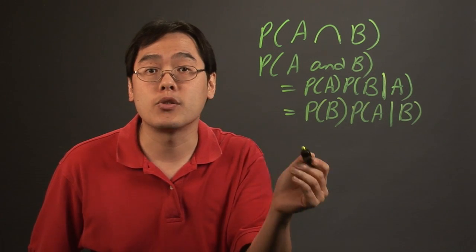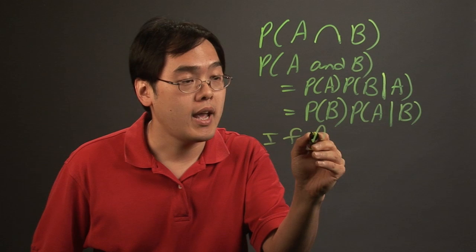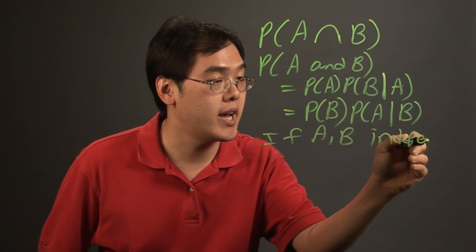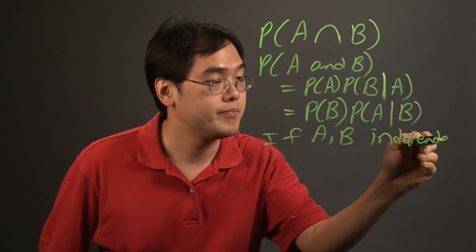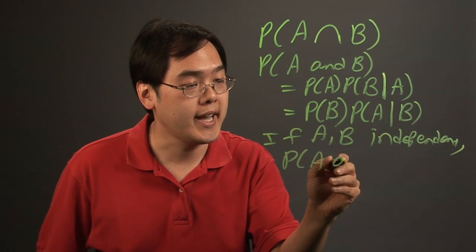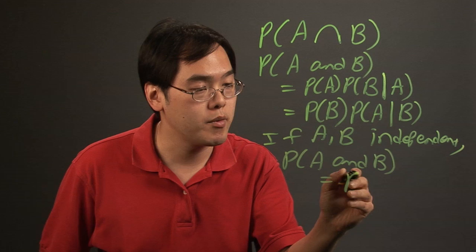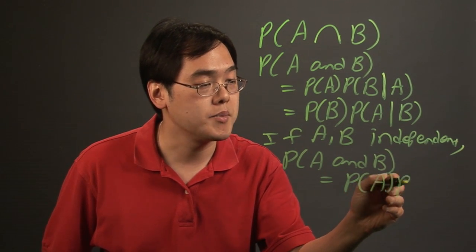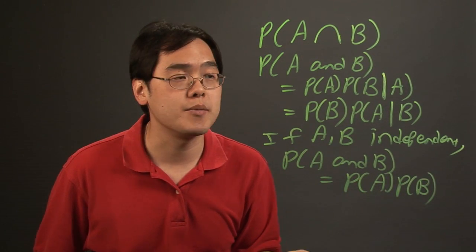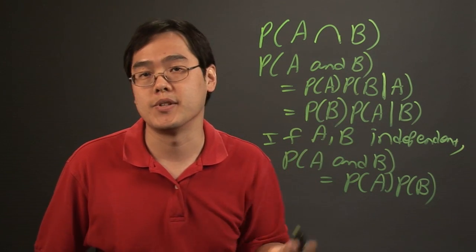There's a special case of this: if A and B are independent events — in other words, if they don't rely on each other — then the probability of A and B can be rewritten as the probability of A times the probability of B. So depending on what the scenario happens to be, you can use the formula this particular way.